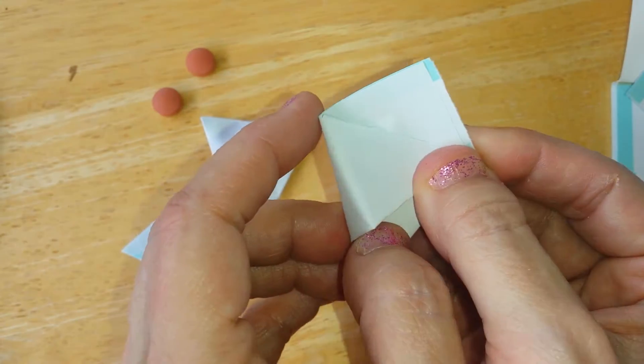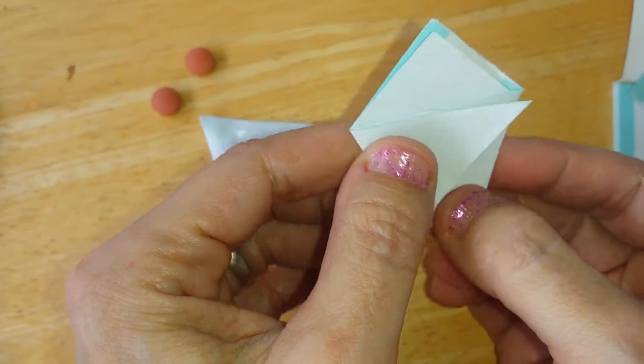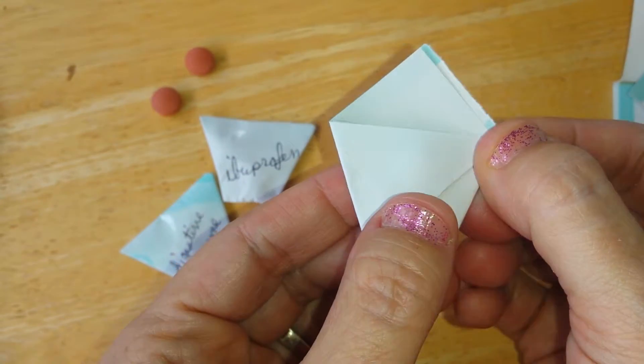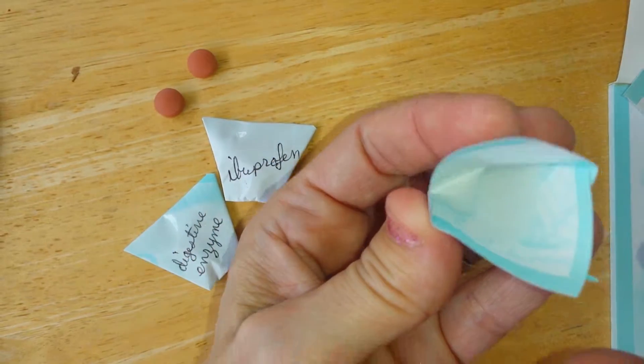Basically, you're making like the old Girl Scout survival cup. So now that it looks like a little Asian takeout pack, there's basically your container.